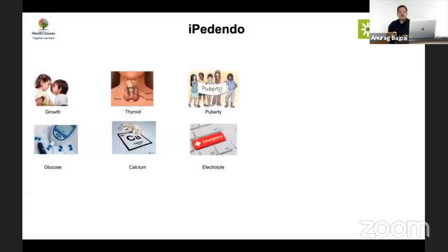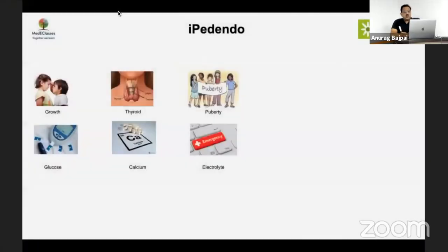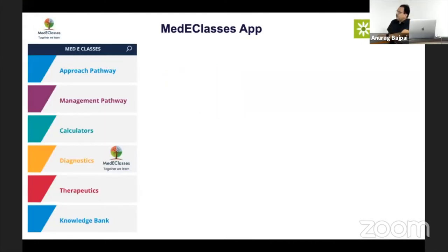The concept of IP Dento has been there for quite some time because we have been trying to solve problems in an easy fashion so that we are able to identify and evaluate complicated pediatric endocrine problems appropriately. It provides a number of approach pathways, management pathways, calculators, diagnostics, therapeutics, and knowledge management.